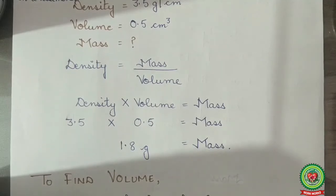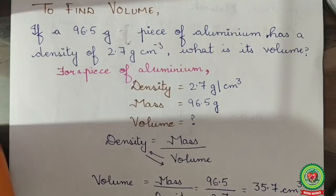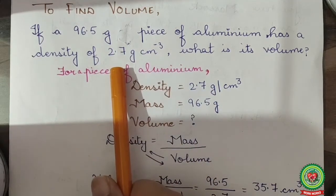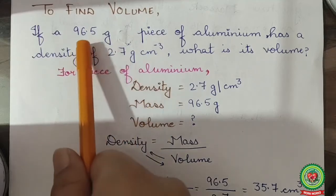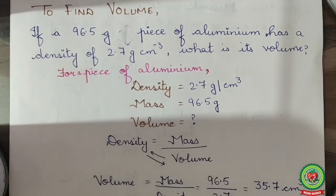We'll solve a numerical problem. If a 96.5 gram piece of aluminium has a density of 2.7 gram per centimeter cube, what is its volume? For aluminium, density is 2.7 gram per centimeter cube and mass is 96.5 grams.